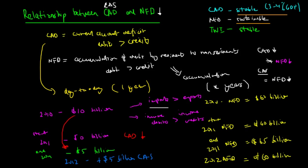Our net foreign debt and our CAD have this relationship: when our CAD decreases, our net foreign debt doesn't necessarily decrease — it only increases at a lower rate. It is only when we have a current account surplus and use the income derived from that surplus to pay off our debt that our net foreign debt should decrease. That's the relationship between the CAD and the net foreign debt.